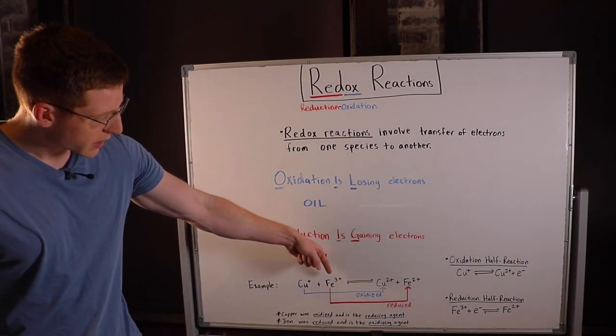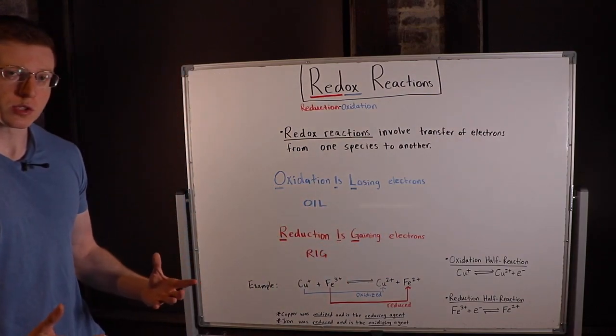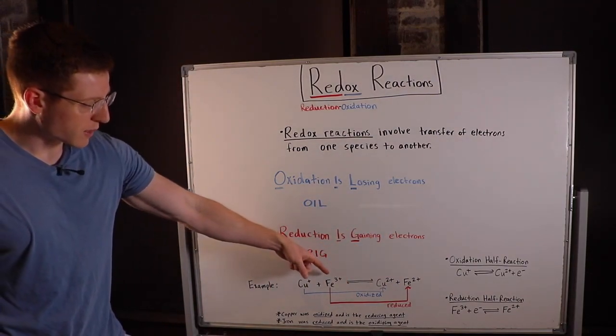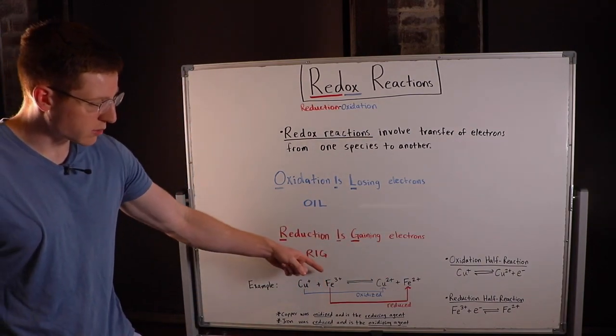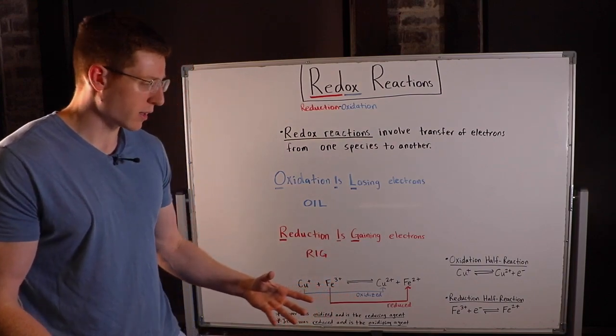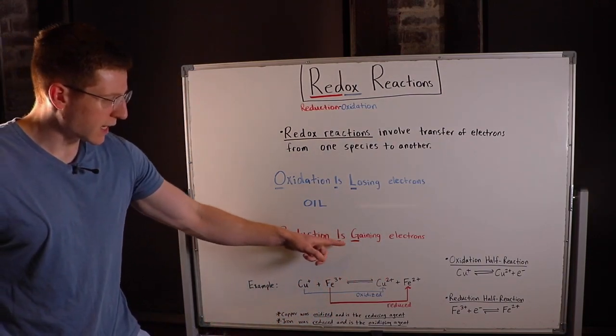Whereas iron started out with a +3 charge and then went down to a +2 charge. The only way that could have happened is if it had gained an electron. Electrons are negatively charged, so you gain one, your charge goes down by one. So the iron was reduced. Reduction is gaining electrons.